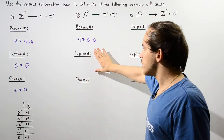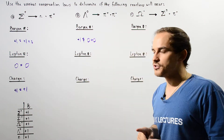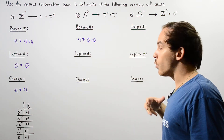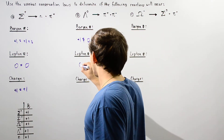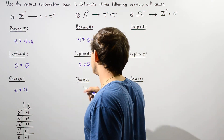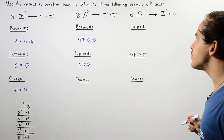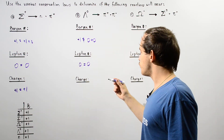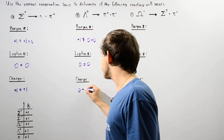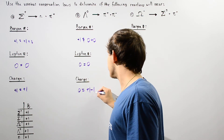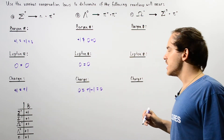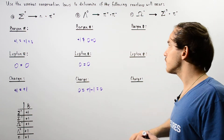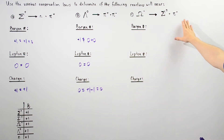Let's finish checking the lepton number and charge. None of these are leptons, so zero equals zero — the lepton number is conserved. For charge, we have zero on the left side. On the right side, positive one minus one gives us zero, so charge is also conserved. But because the baryon number is not conserved, reaction B will not take place.